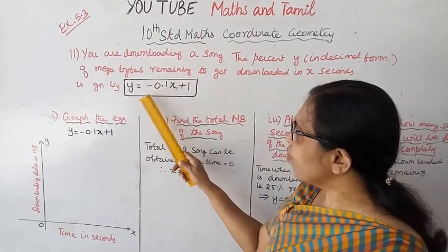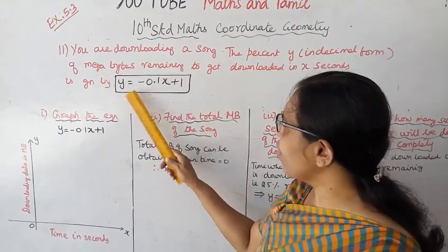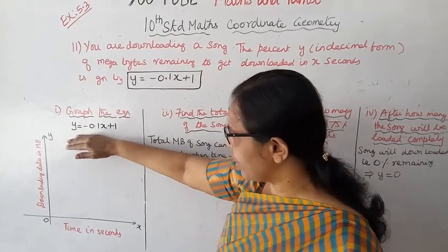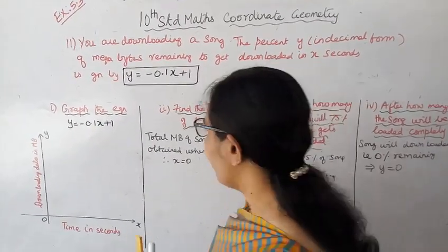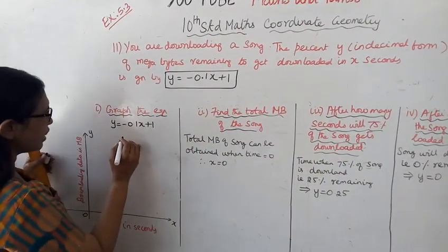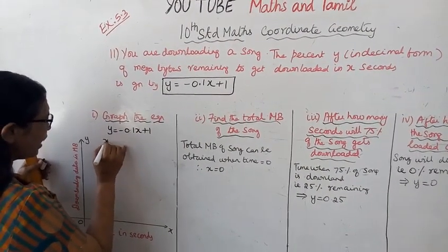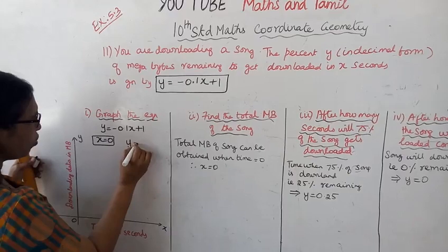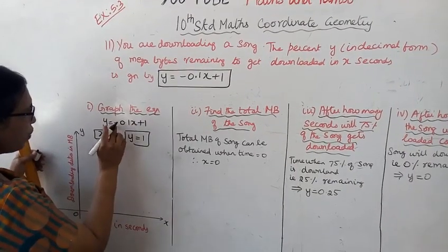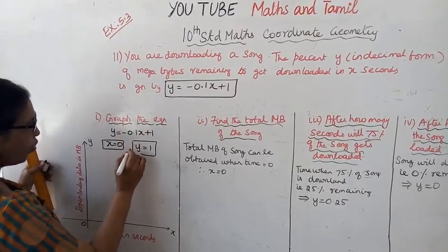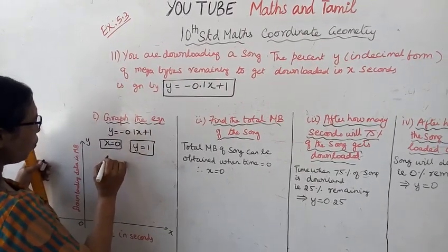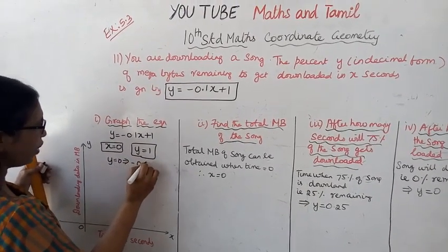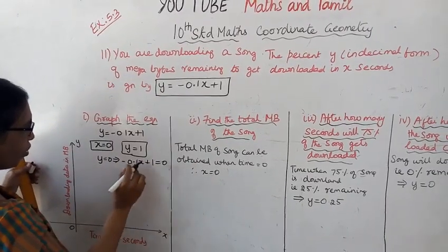First, let's graph the equation. The equation given is y equal to minus 0.1x plus 1. Using this, we will draw the graph. For the graph, what is y when x is 0? We set minus 0.1x plus 1 equal to 0.